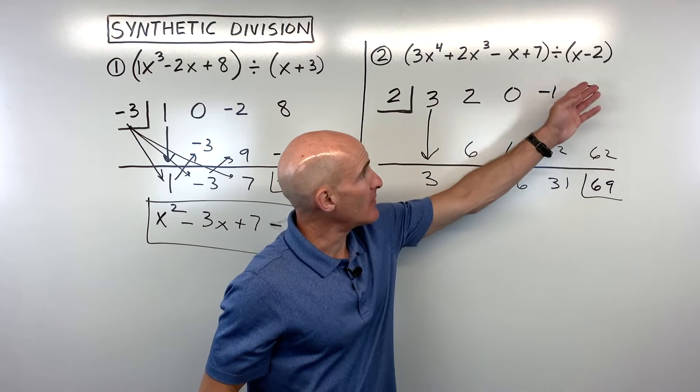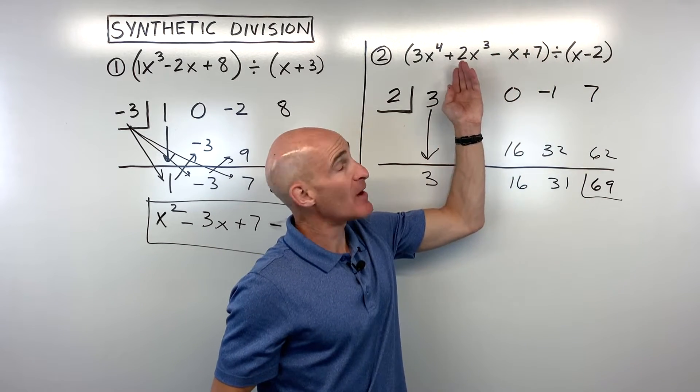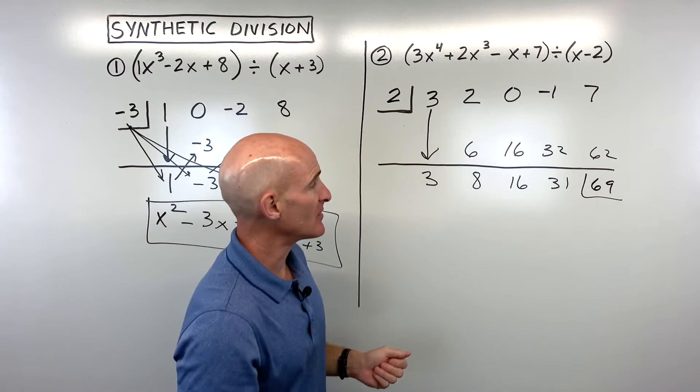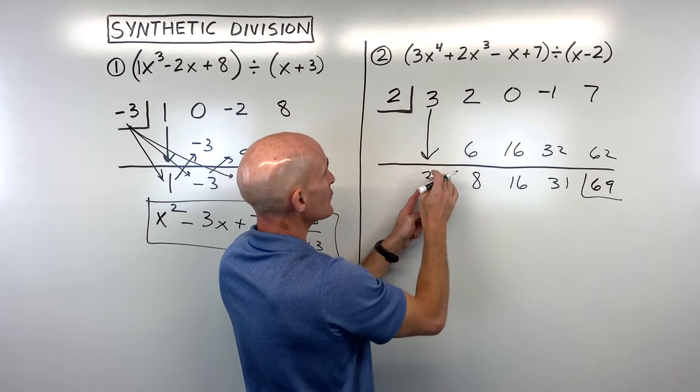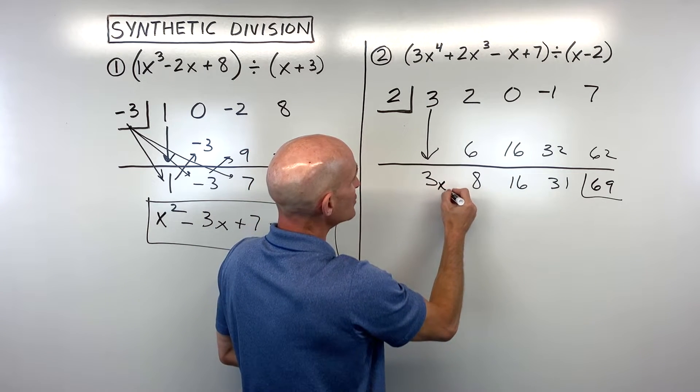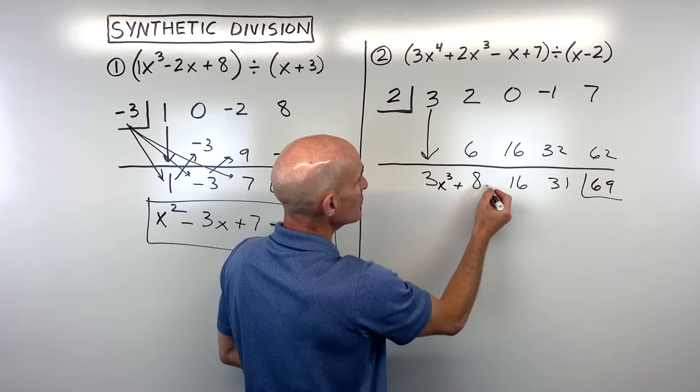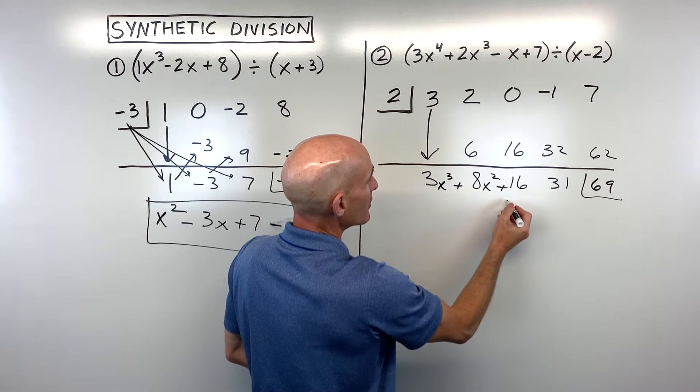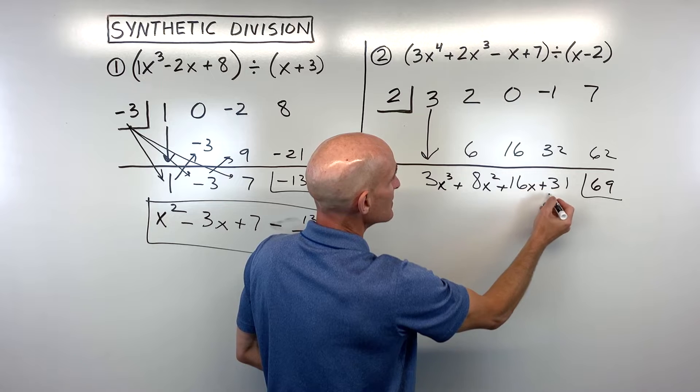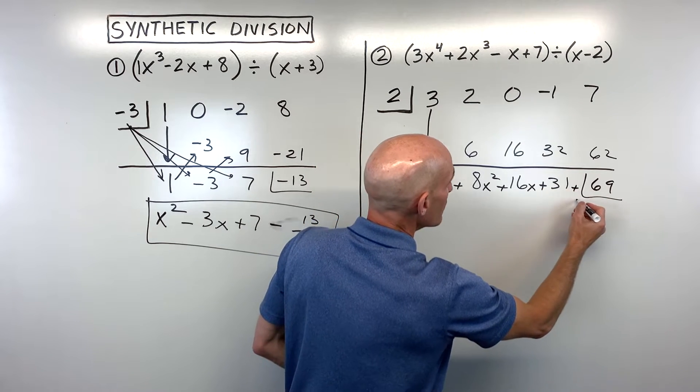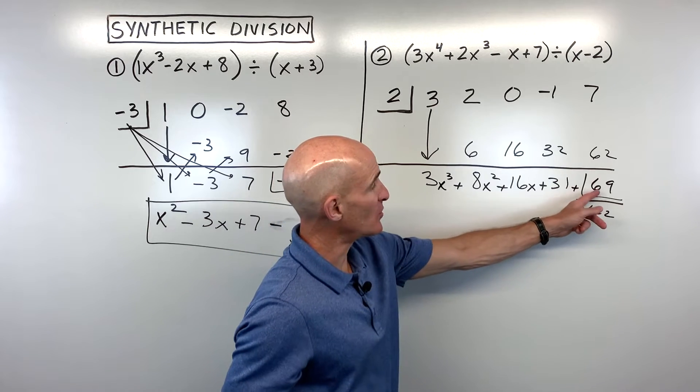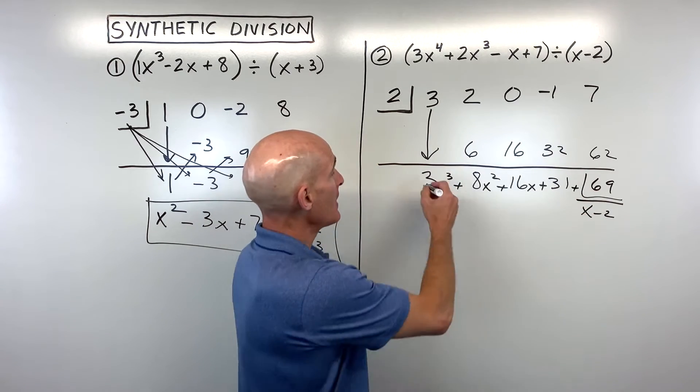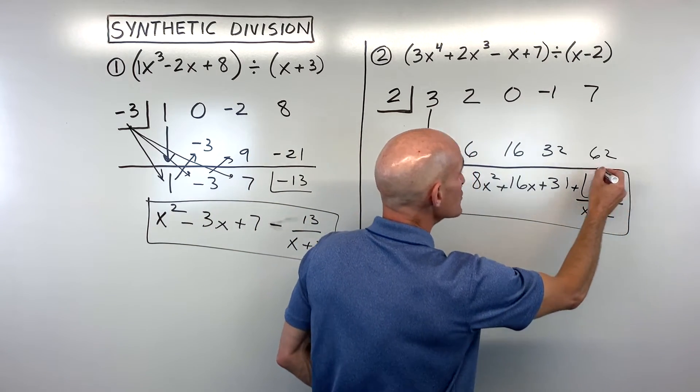Now, if there was no remainder, that means that x minus 2 goes into this polynomial evenly. Okay? But in this case, there is a remainder. And remember, it goes down by 1 degree. So we have x to the 4th here. So this is actually going to be 3x cubed plus 8x squared plus 16x plus 31 plus 69 divided by x minus 2. So you just put that remainder over the divisor. And this is your final result.